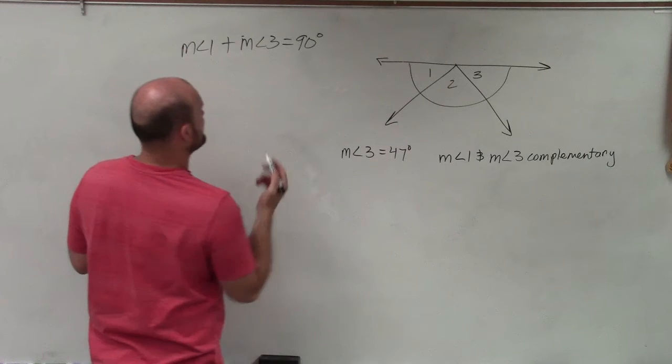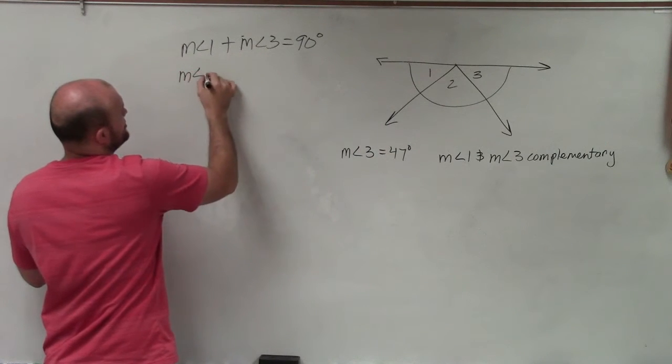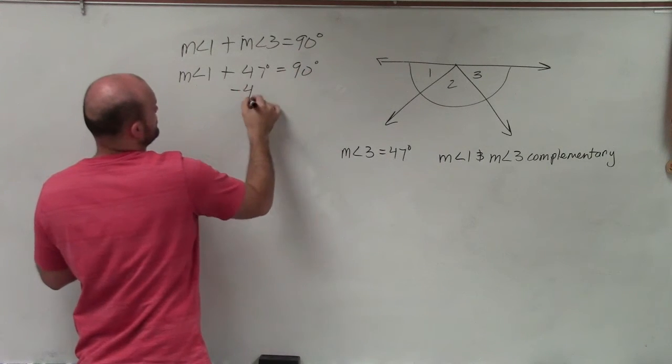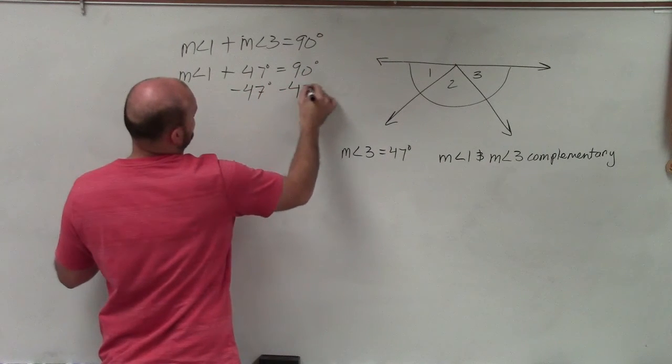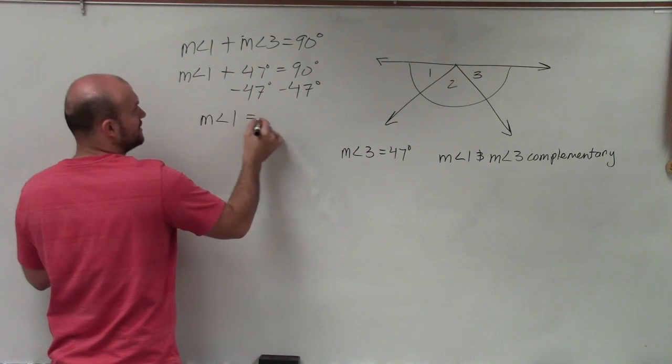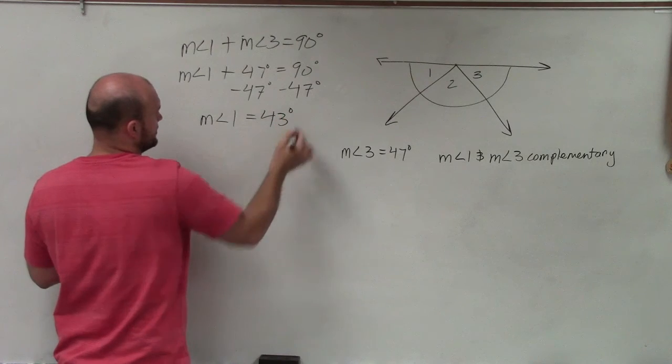Well, we already know measure of angle 3 is 47. So I can say measure of angle 1 plus 47 degrees equals 90 degrees. Subtract 47 degrees. Measure of angle 1 is going to equal 43 degrees.